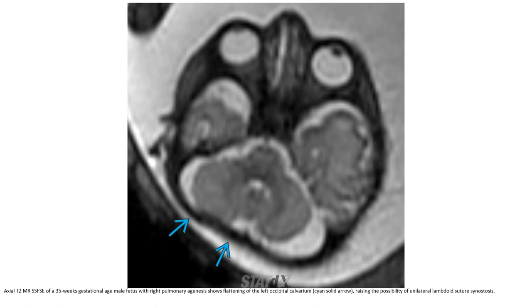This is a T2 RSS FSE MRI of a 35-week gestational age male fetus with right pulmonary agenesis, showing flattening of the left occipital calvarium, raising the possibility of unilateral lambdoid suture synostosis.